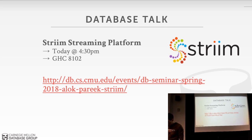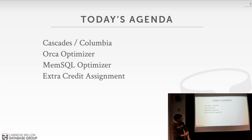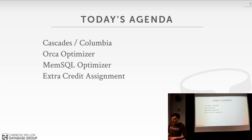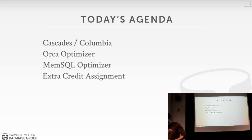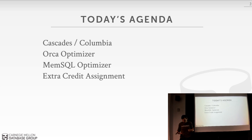Today's agenda will focus on Cascades. I had you guys read the MemSQL paper on their optimizer — it's an okay paper, but it's not a Cascades implementation. I'm still looking for the right paper for this second lecture on optimization. We'll spend most of our time talking about Cascades as described in the Columbia paper, then talk about ORCA — a modern implementation of Cascades — and finish up with the extra credit assignment going out today.